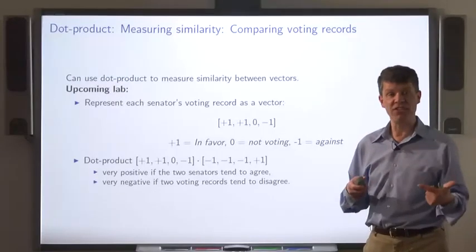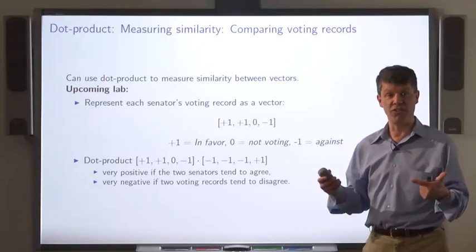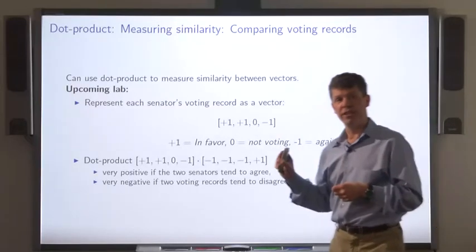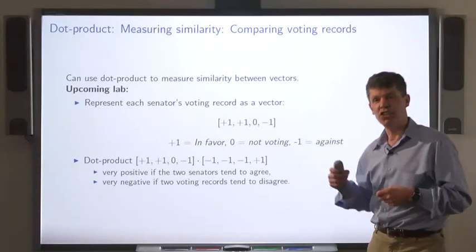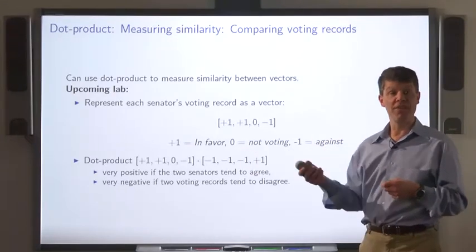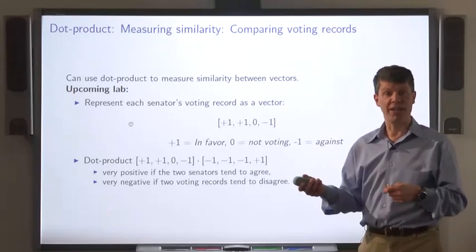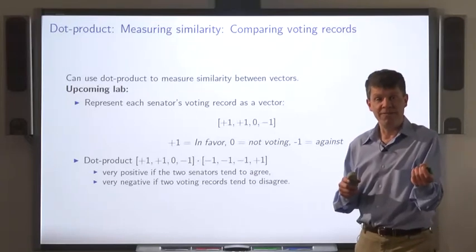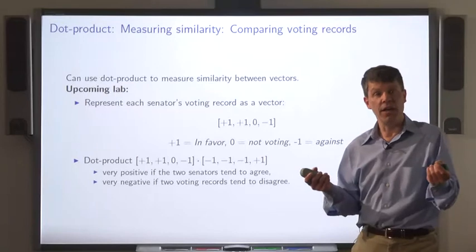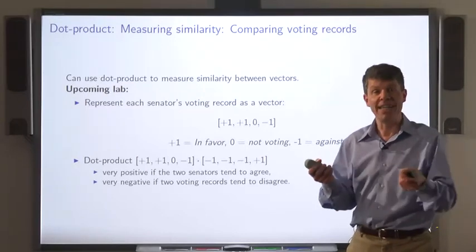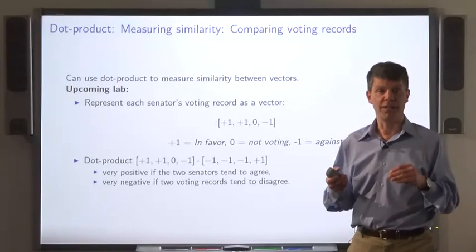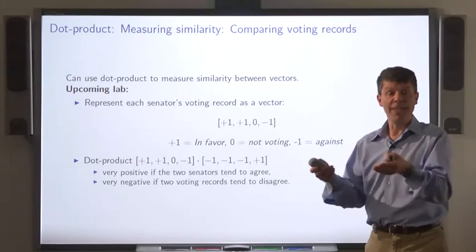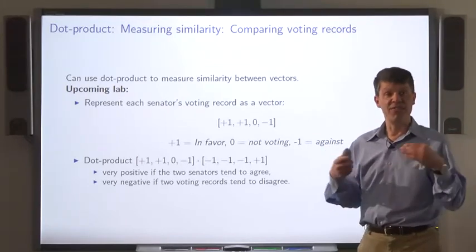Now we can compare that senator's voting record to another senator's voting record by taking the dot product of those two vectors. For corresponding entries, if both of them are plus one, then this contributes a one to the dot product. If both of them are minus one, this contributes a one to the dot product. In either case, that means the senators agreed on that bill. If one of them voted in favor and one voted against, then the product of corresponding elements is minus one. Overall, the value of the dot product is high if the two senators agreed a lot and low, or even negative, if the senators disagreed a lot.